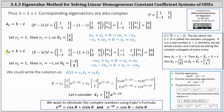And now we do the same for lambda sub two equals one plus i. The only difference in the setup is lambda is now one plus i. P minus lambda I results in the two-by-two matrix with entries negative i, one, negative one, negative i, times vector V equals the zero vector. The first equation indicates that V₂ equals i·V₁. The second equation indicates that V₁ equals negative i·V₂. Using the second equation, notice if V₂ equals one, then V₁ equals negative i, giving us the corresponding eigenvector — the vector V₂, which is the vector [negative i, 1].